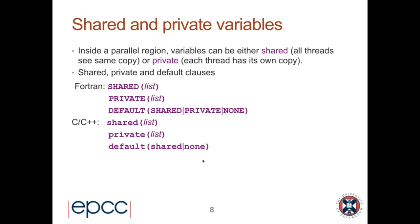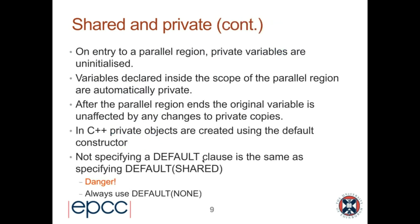If there are variables inside the parallel region not listed in the shared or private clauses, their behavior comes from the default clause. In Fortran, you can say 'default(shared)', 'default(private)', or 'default(none)'. In C/C++, for technical reasons it's not possible to specify 'default(private)', so your only choices are 'shared' or 'none'. For private variables, every thread gets a new copy of that variable, and on entry to the parallel region those copies are uninitialized. In C/C++, variables declared inside the scope of the parallel region are automatically private.